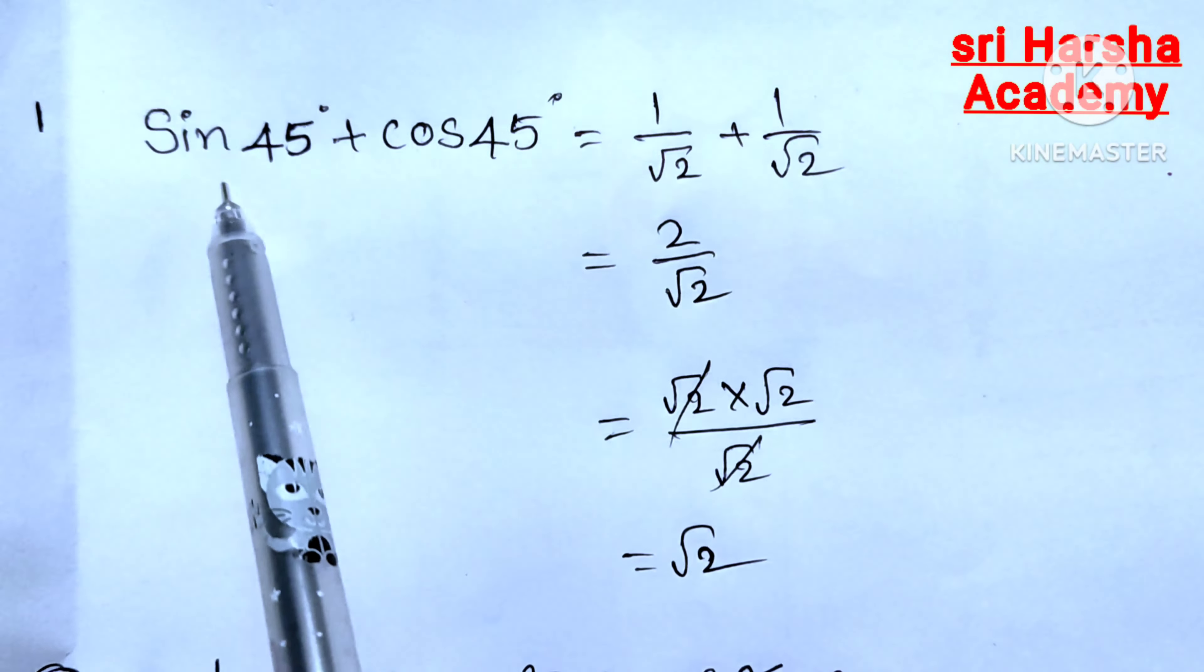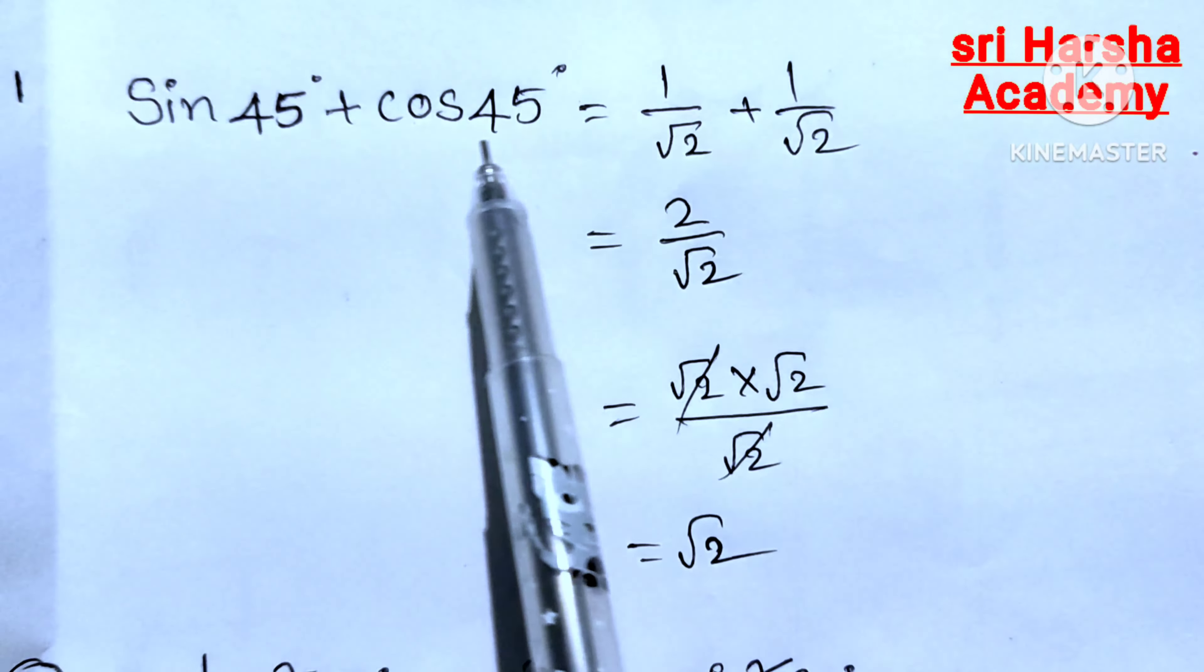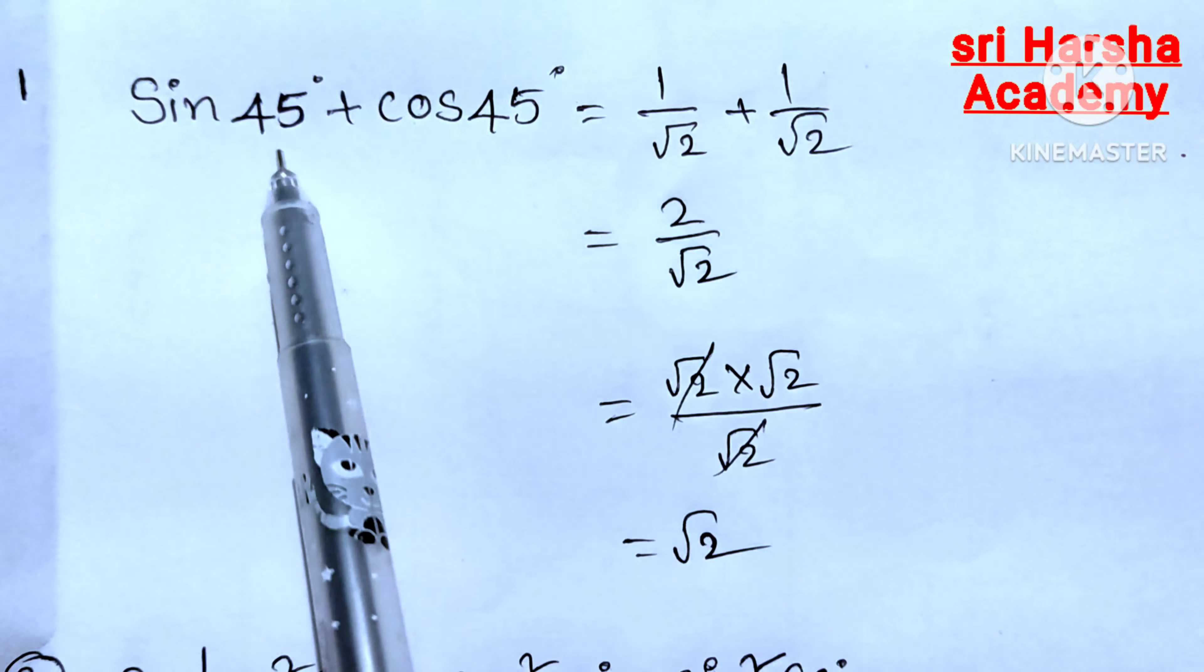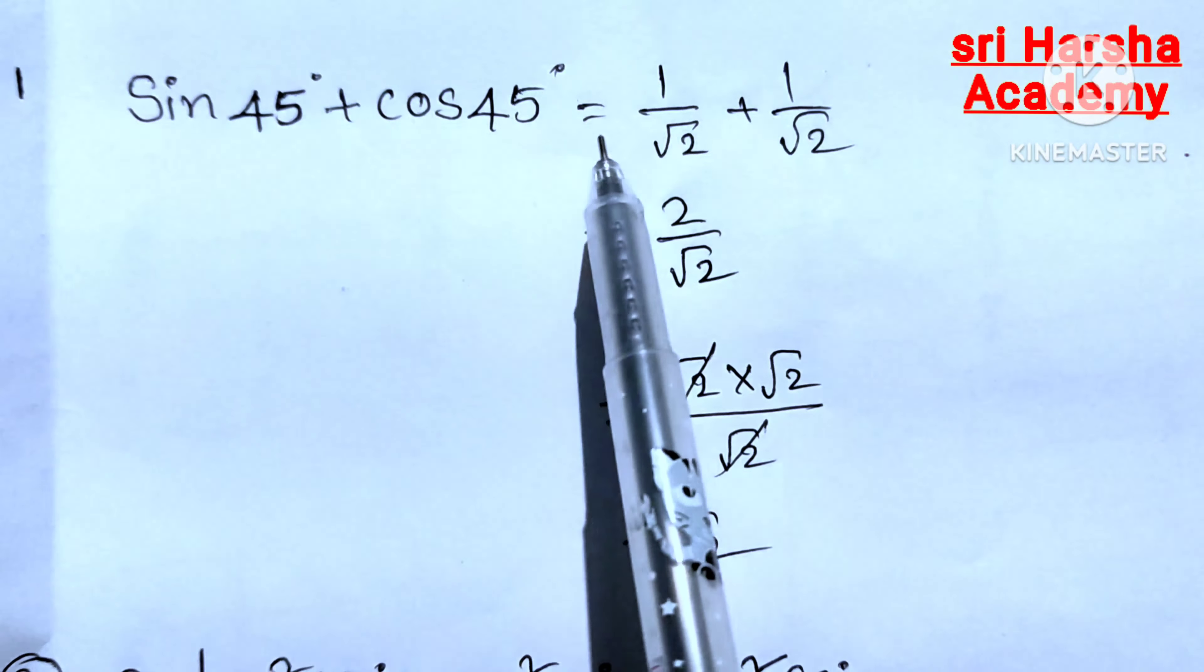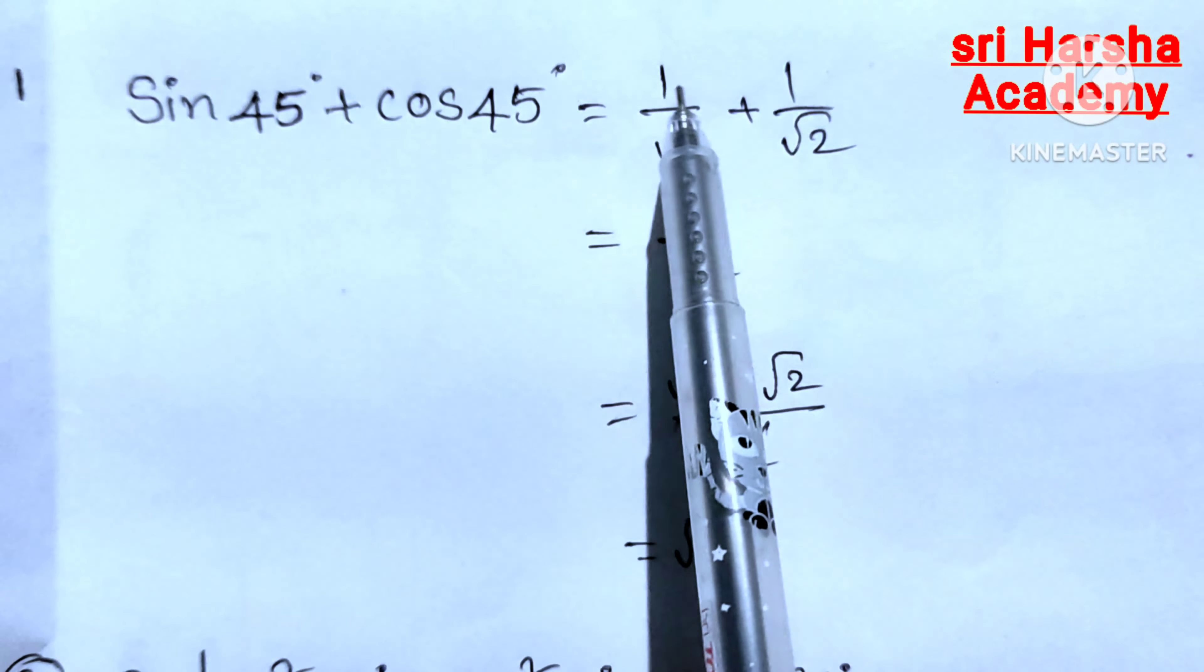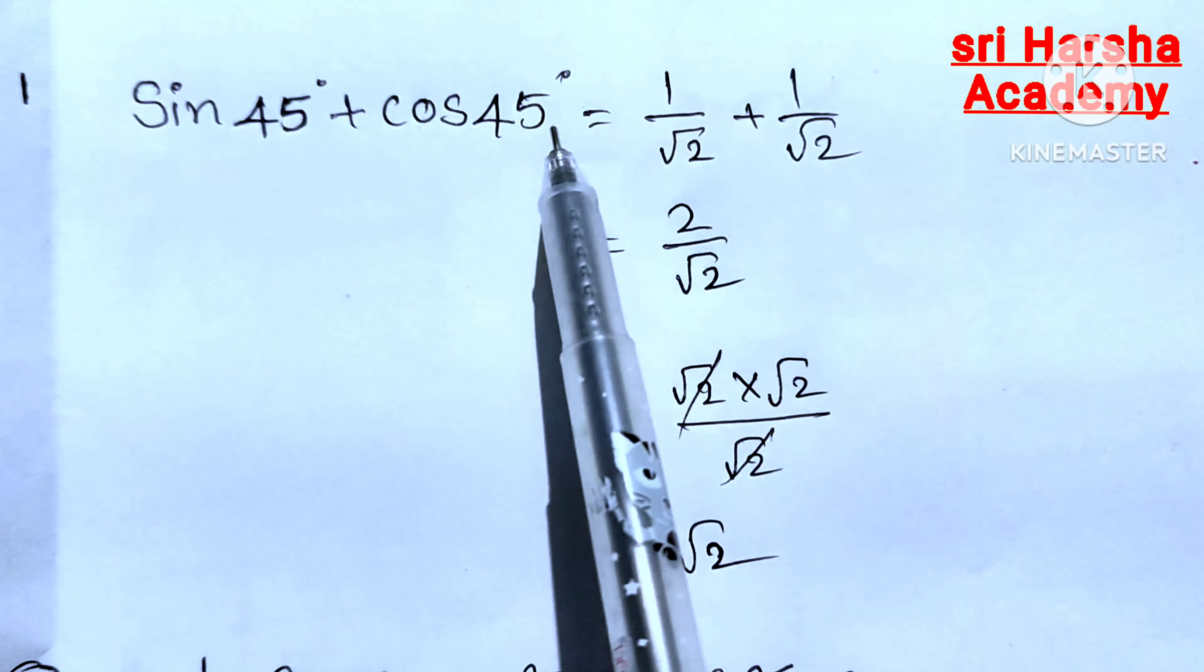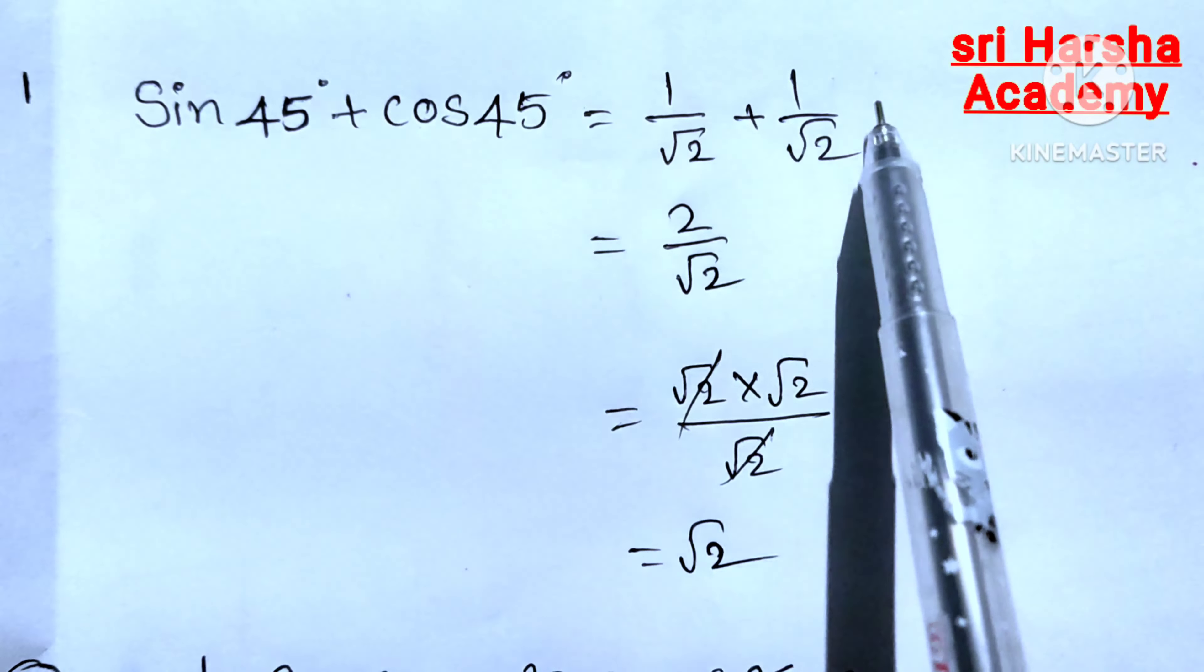Find the value of sin 45 degrees plus cos 45 degrees. Sin 45 degrees plus cos 45 degrees equals sin 45 degrees value is 1 by root 2 plus cos 45 degrees value is also 1 by root 2.